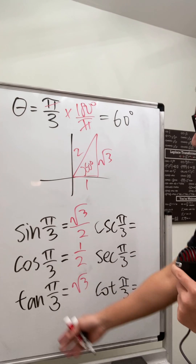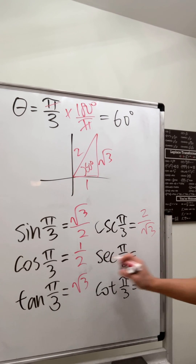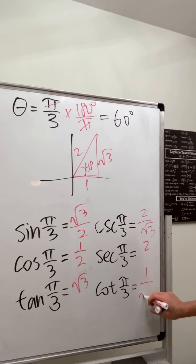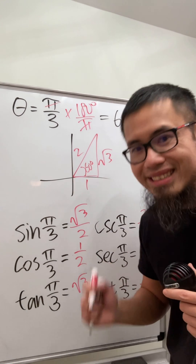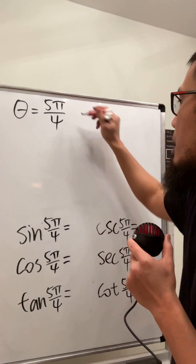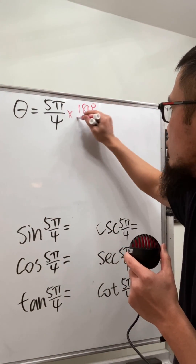For the reciprocal functions, cosecant is 2 over square root of 3, secant is 2 over 1, and cotangent is 1 over square root of 3. We are done with π/3. Now theta is equal to 5π/4.